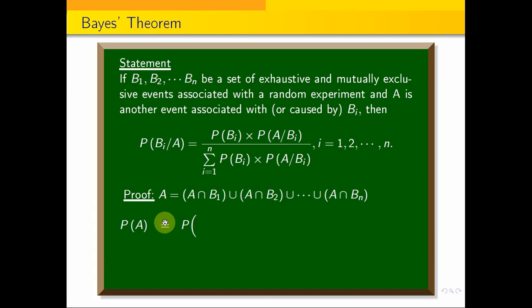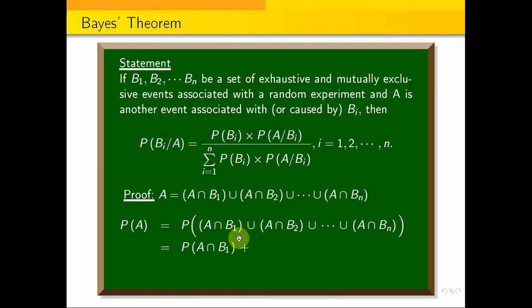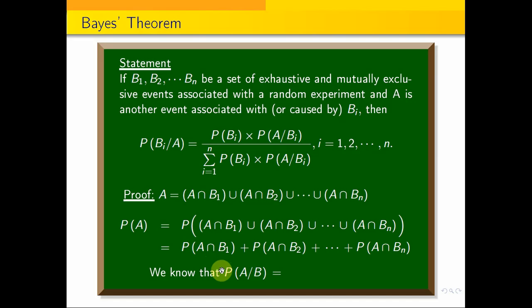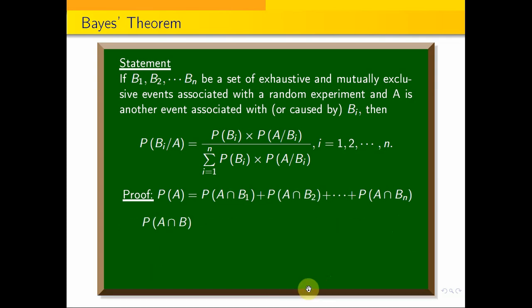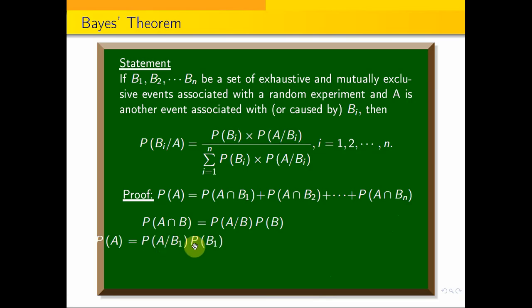P(A) is equal to the probability of all the unions. Since the events are mutually exclusive, by the addition rule: P(A) = P(A intersection B1) + P(A intersection B2) + ... + P(A intersection BN). We can write the formula: P(A intersection B) = P(A given B) times P(B). Therefore A intersection B1 gives P(A given B1) times P(B1) plus P(A given B2) times P(B2), and so on.